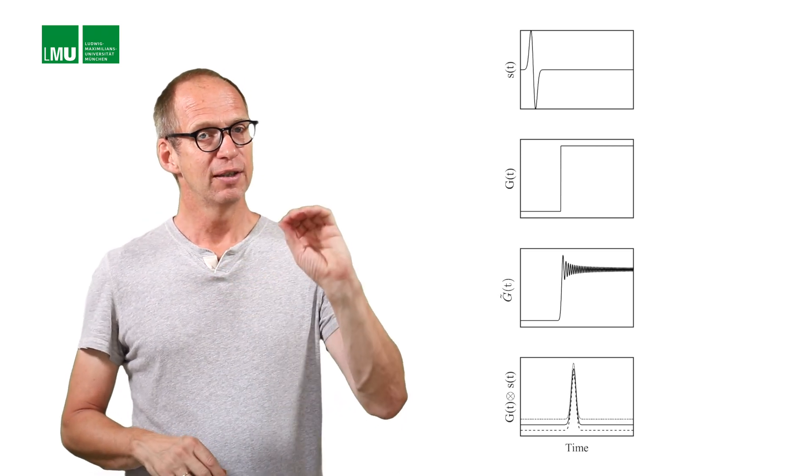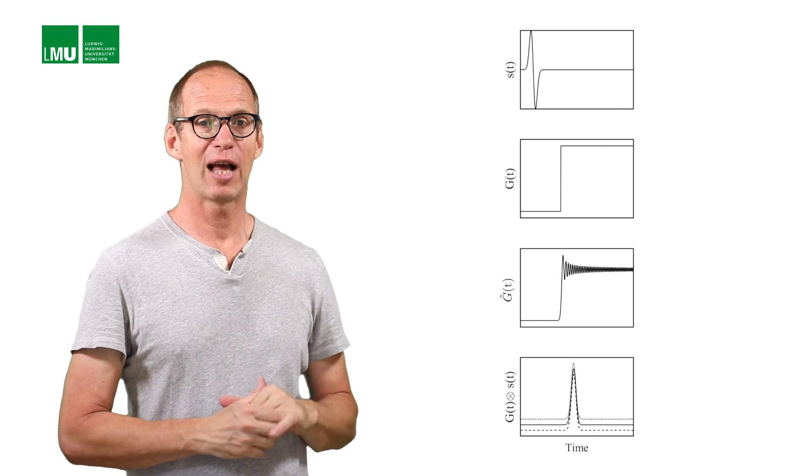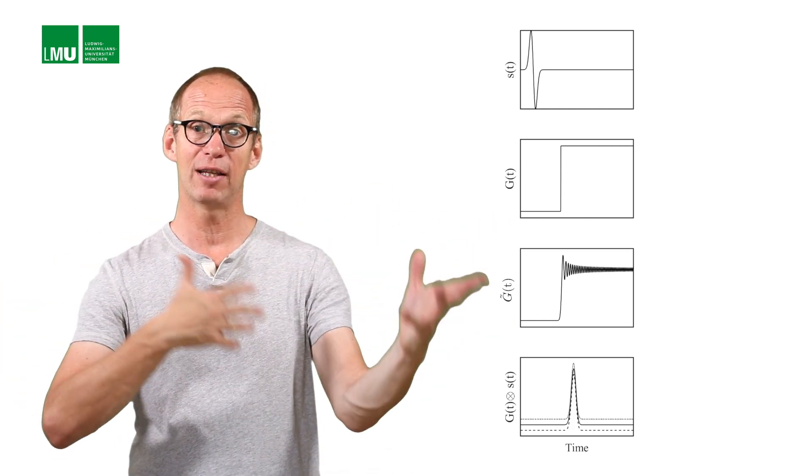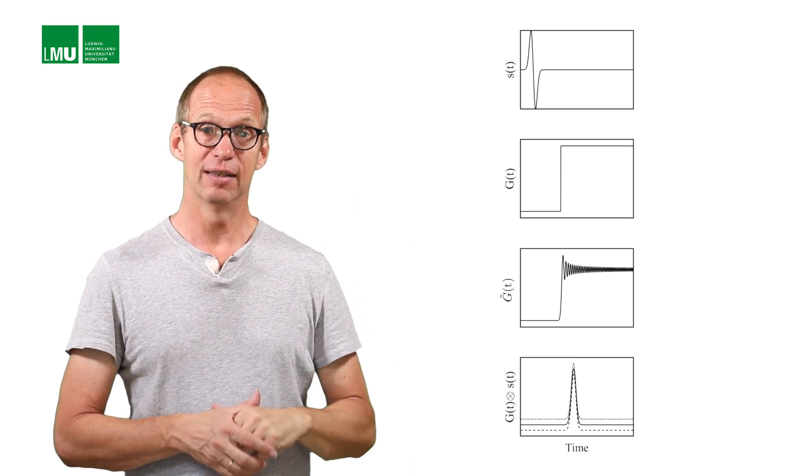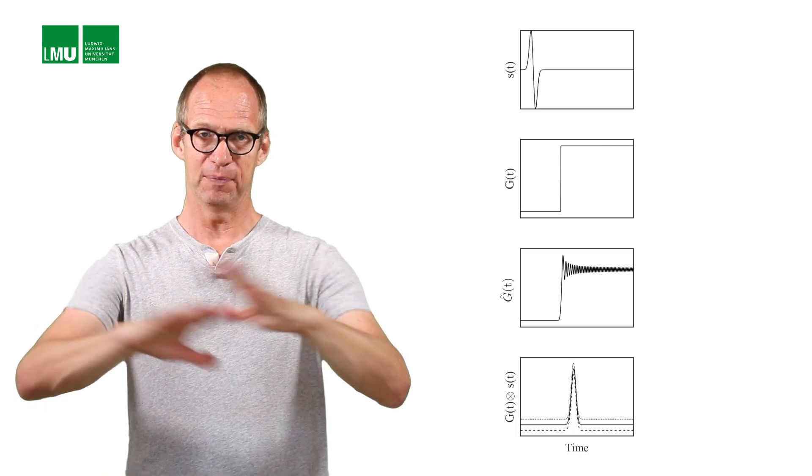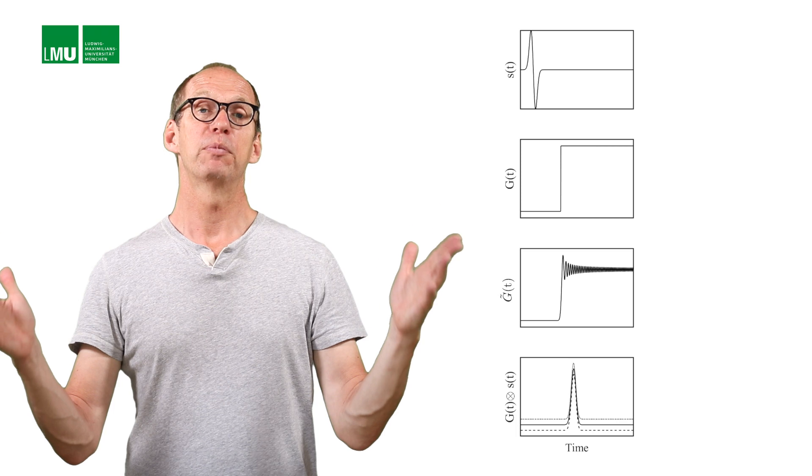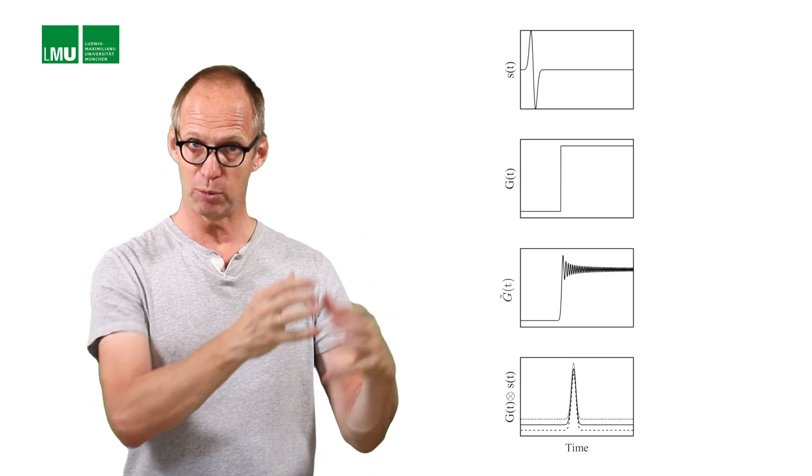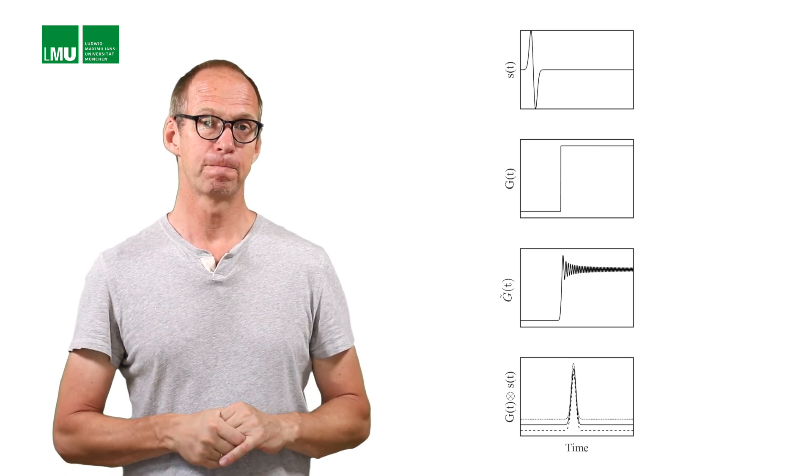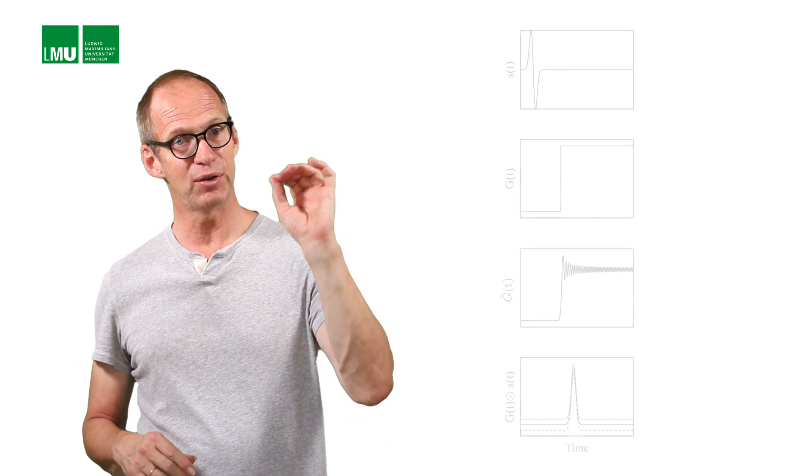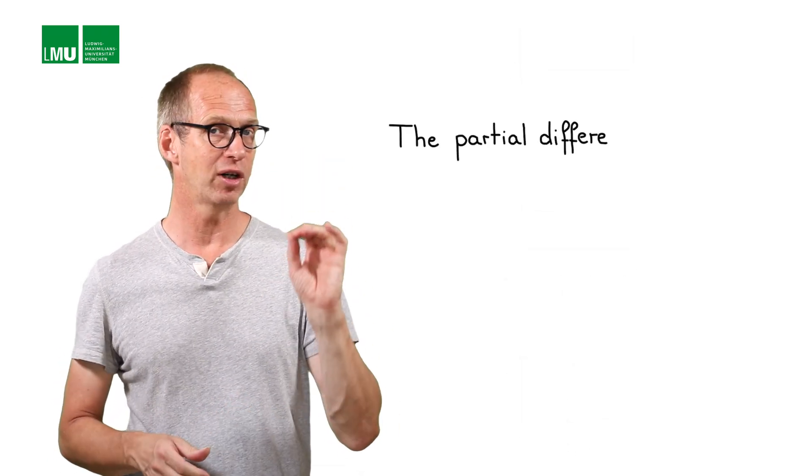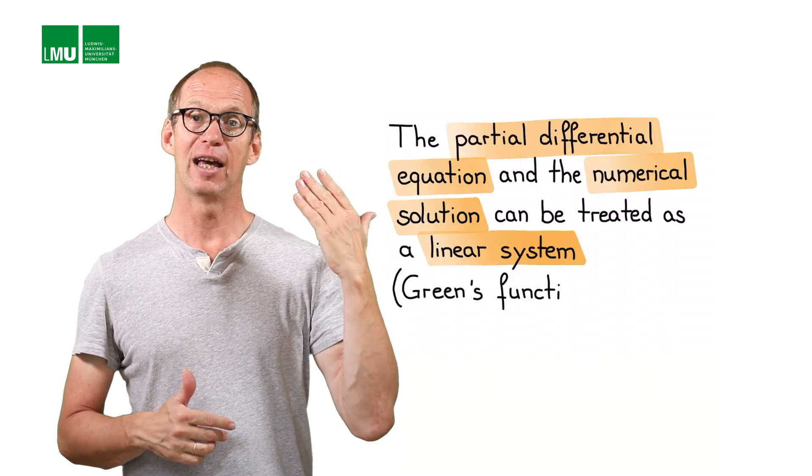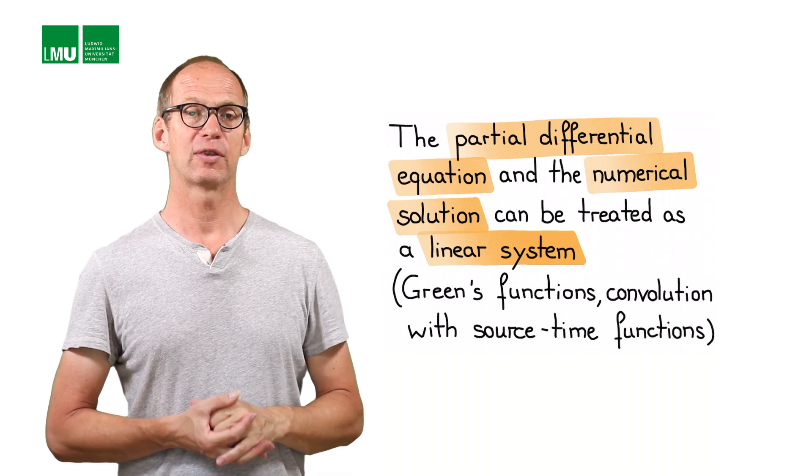I hope I haven't confused you. That might seem academic, but it actually has a lot of potential applications. Because that means, for example, if you want to understand wave propagation in a very strongly heterogeneous, maybe a random medium, you can actually inject a kind of a delta function in your numerical algorithm. You get a basically completely wrong numerical solution, but you can filter it later. If you make sure that your algorithm is correctly modeling the frequency domain of your source-wavelet, you will actually obtain the correct result. So, that's a consequence of the fact that not only the partial differential equation itself, but also our numerical solution actually can be treated as a linear system, with all the consequences concerning Green's functions and convolution with potential source-time functions. A very powerful concept.